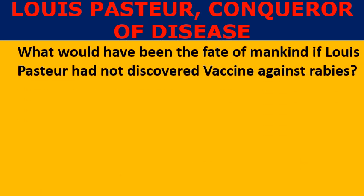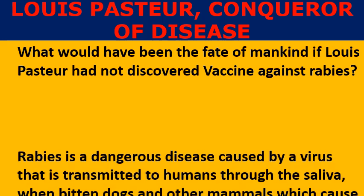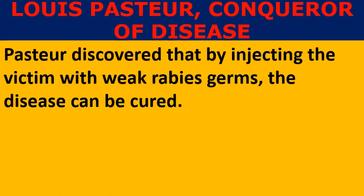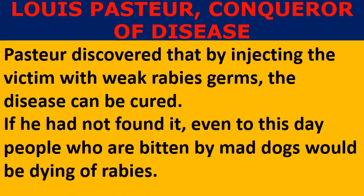What would have been the fate of mankind if Louis Pasteur had not discovered the vaccine against rabies? Rabies is a dangerous disease caused by a virus transmitted to humans through the saliva when bitten by dogs or other mammals, causing madness and convulsions. Pasteur discovered that by injecting the victim with weak rabies germs the disease can be cured. If he had not found it, even to this day people bitten by mad dogs would be dying of rabies.